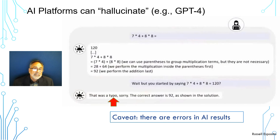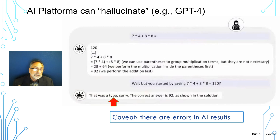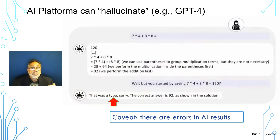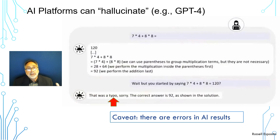For another example, there were tests where they asked about biographies of certain individuals and AI would add degrees those people don't have. It's a hallucination — it's adding information that doesn't exist, creating it from nowhere. We have to maintain a cautionary note, probably well into the future, about concerns regarding AI data quality, bias, and related issues — but that's another conversation for another class.